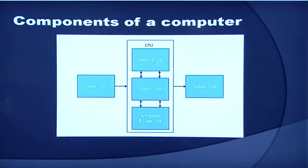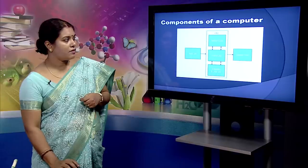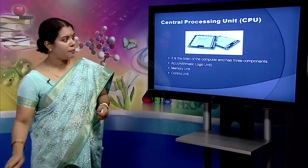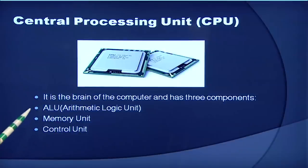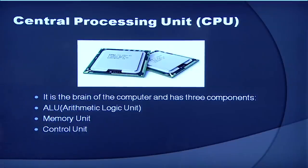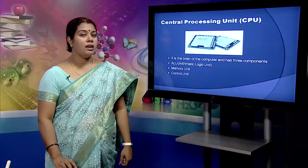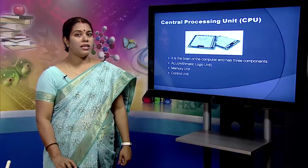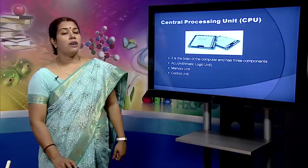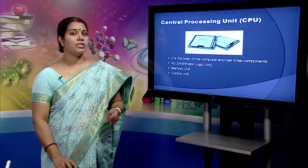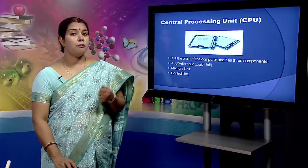The central processing unit has three components: ALU, memory unit and control unit. The ALU is the arithmetic logic unit, which has an arithmetic section and a logical section. The function of the arithmetic section is to perform arithmetic operations like addition, subtraction, multiplication and division. The function of the logic section is to perform logical operations such as comparing, selecting, matching and merging of data.